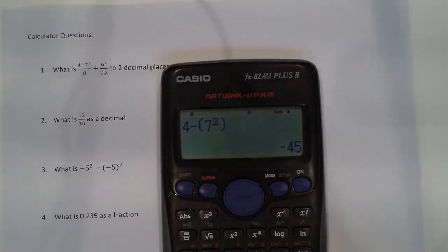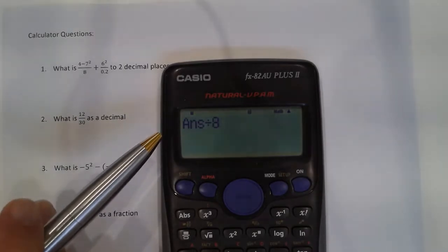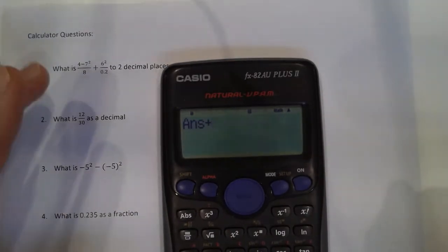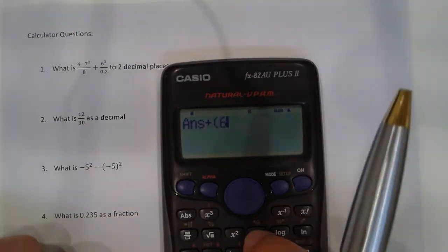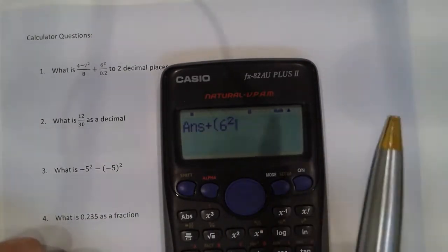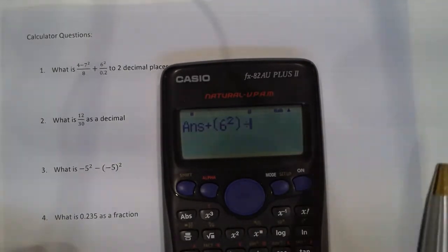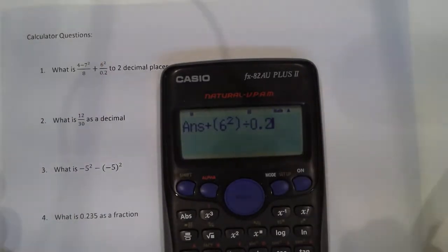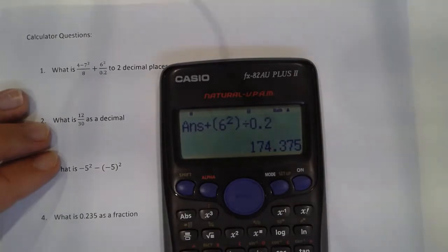Then I'm just going to press divided by 8, and you'll see that it's got my answer that I previously had, divided by 8, equals. So now I'm going to add. So I'm just going to press add. So whatever I've just had, now it's 6 squared, which again I'm going to put into brackets. 6 squared, divided by 0.2. So it's my answer plus whatever I'm doing here, and then I press equals, I'll have my correct answer.